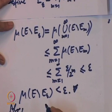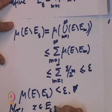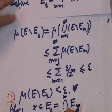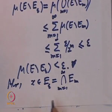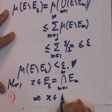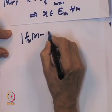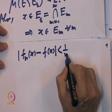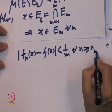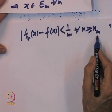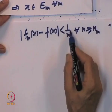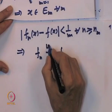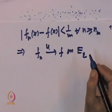Also, if x belongs to E_epsilon (which is the intersection of all E_m), then x belongs to E_m for every m. So |F_n(x) - F(x)| < 1/m for every n ≥ n_m. That means for every m we can find a stage after which the difference F_n(x) - F(x) is less than 1/m for every x in E_epsilon. This implies F_n converges to F uniformly on E_epsilon.